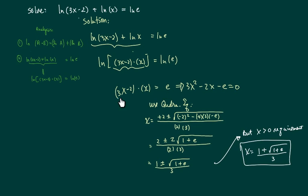That's what I wrote here. Clean up the expression a little bit and you have 3x² - 2x - e = 0. Using the quadratic equation and simplifying, you get two solutions.